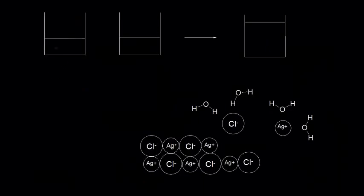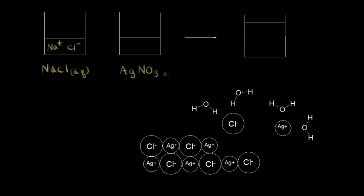Now let's say we have one beaker containing a solution of NaCl — an aqueous solution of NaCl has sodium cations and chloride anions in solution. Let's say we have another beaker containing a solution of silver nitrate, AgNO3. An aqueous solution of silver nitrate means we have silver cations, Ag+, and nitrate anions, NO3−, in solution.